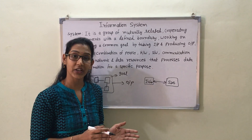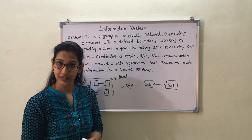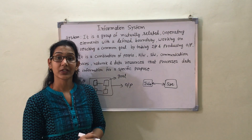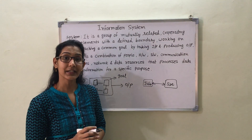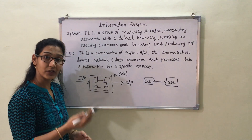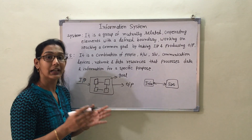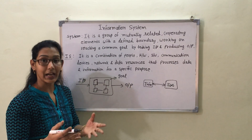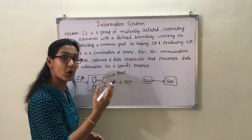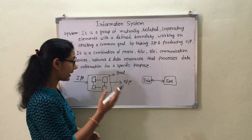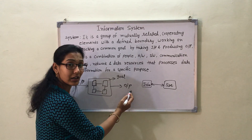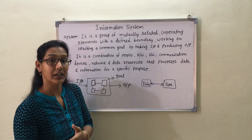These resources process data and information for a specific purpose. The information system is mainly used for operations, management, and decision making. Every information system needs to take input from the user in the form of clicking, typing, and commands, which will then process the data.